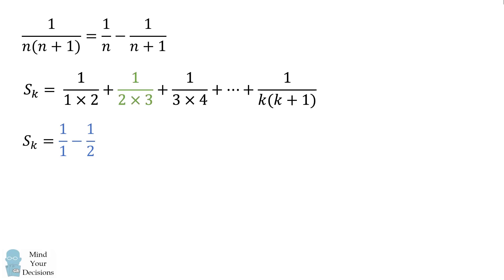We can now apply the formula to the second term. This will be equal to 1 over 2 minus 1 over 3. When we apply it to the third term we're going to have 1 over 3 minus 1 over 4.